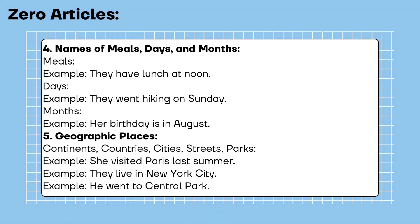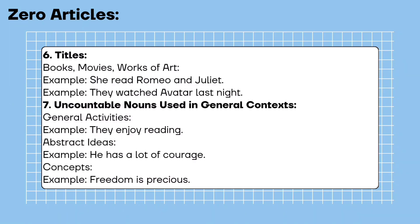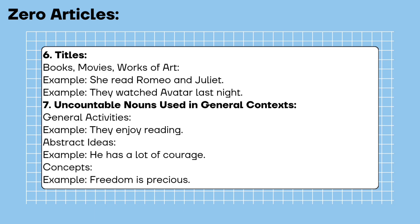Geographic places — continents, countries, cities, streets, parks. Example: she visited Paris last summer; they live in New York City; he went to Central Park. Titles — books, movies, works of art. Example: she read Romeo and Juliet; they watched Avatar last night. Uncountable nouns used in general contexts — general activities. Example: they enjoy reading. Abstract ideas. Example: he has a lot of courage. Concepts. Example: freedom is precious.